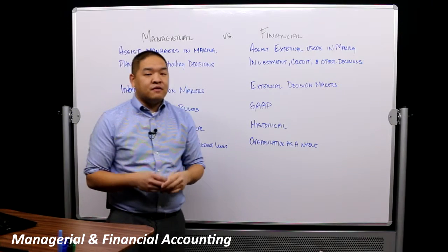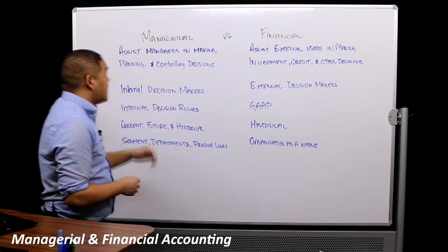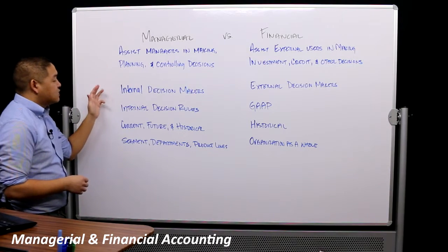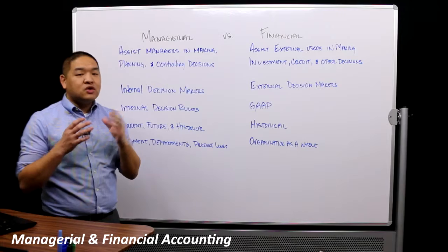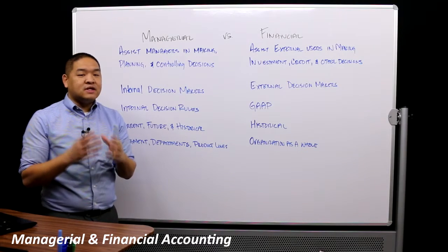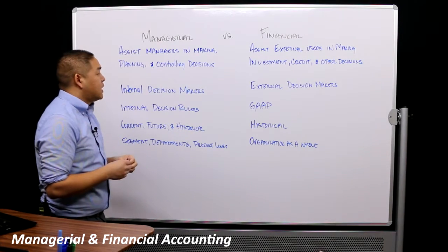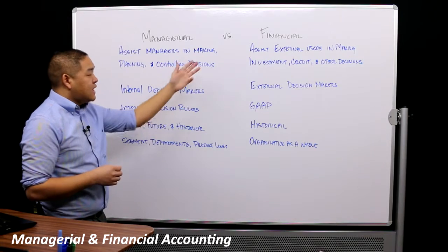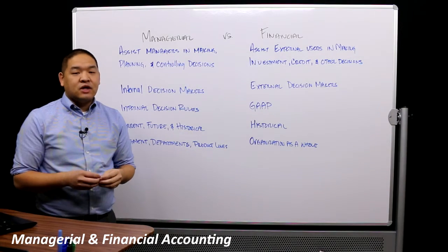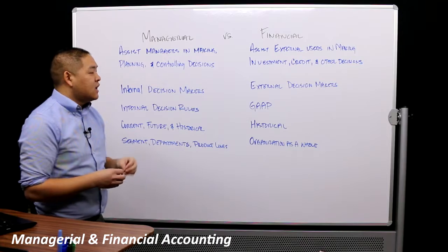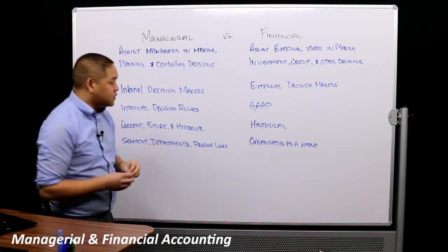Governmental agencies are also making decisions using financial accounting. So the first big difference between financial and managerial accounting is who benefits from the information provided by the organization. With managerial accounting we're talking about internal decision makers — that's who we're trying to satisfy. With financial accounting we're trying to satisfy external decision makers.